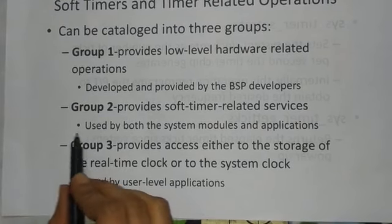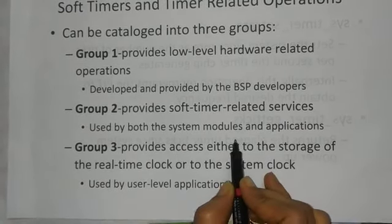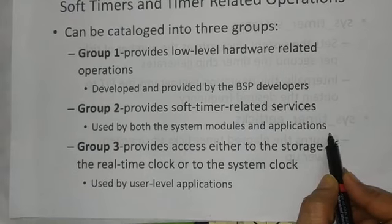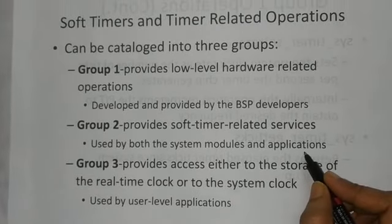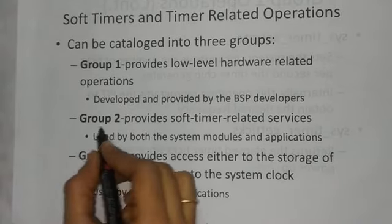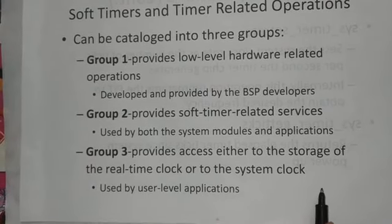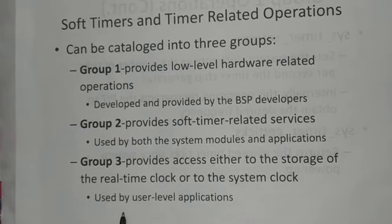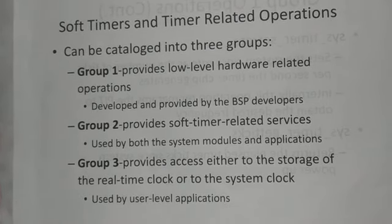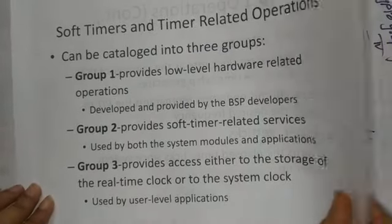Group 2 provides soft timer-related services that are a combination of system modules and applications. System modules refer to internal system-developed programs, and applications refer to tasks given by the user to the system. Group 3 provides access either to the storage of the real-time clock or to the system clock. The real-time clock is a general system-installed clock, and the system clock is derived from it. These real-time and system clocks are used by user-level applications.